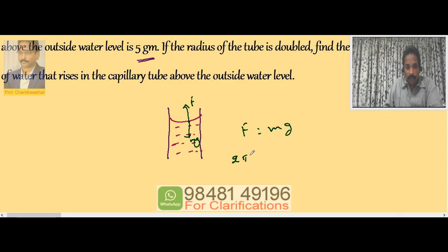F is nothing but 2 pi r into T cos theta. This is mg.